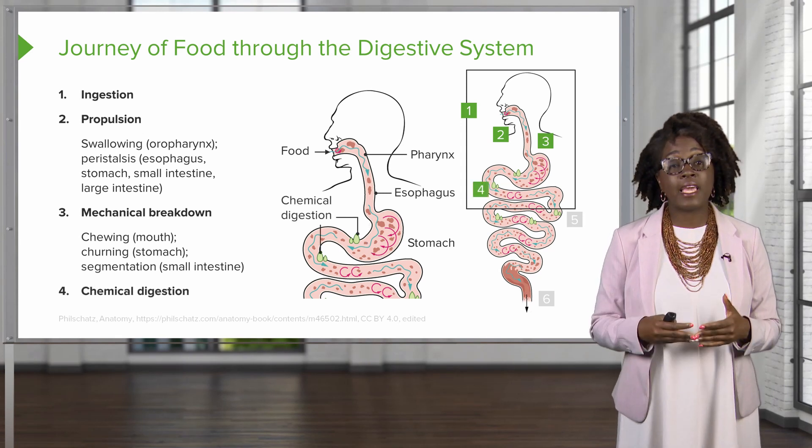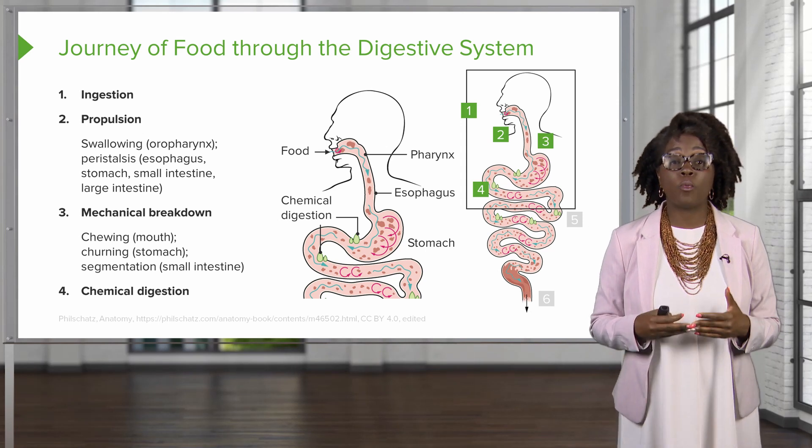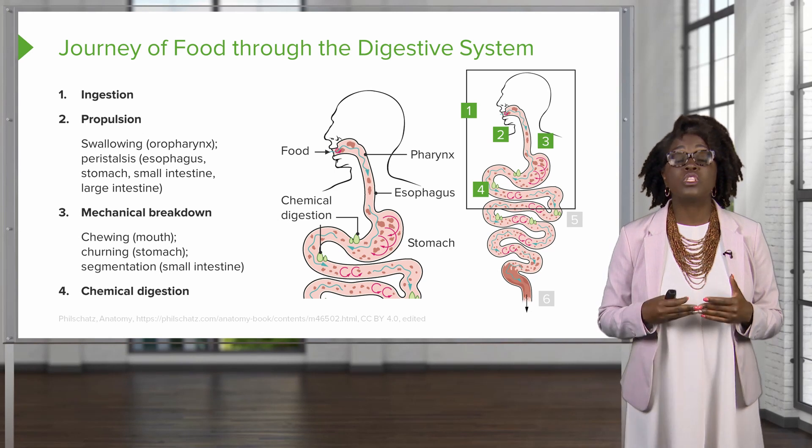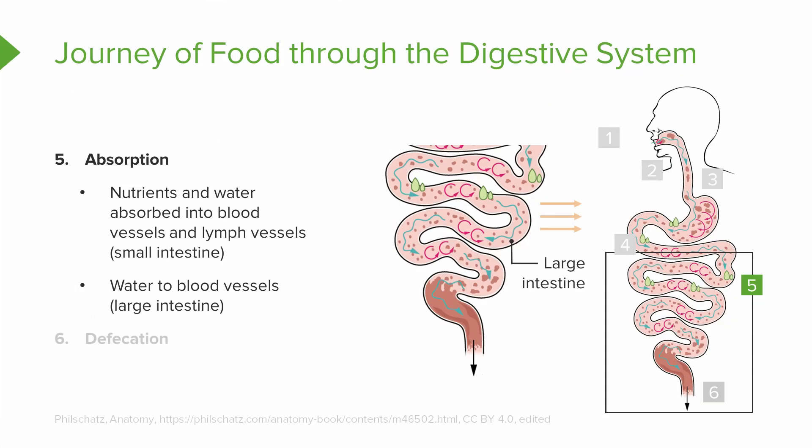Along with mechanical breakdown, we also have a chemical breakdown of our food from the larger biomolecules to the smaller biomolecules. After we break the food down, we have absorption. Absorption is going to take place mostly in our small intestine and our large intestine. In this process, nutrients and water are going to be absorbed into the blood vessels or the lymph vessels. Water is also going to go into the blood vessels, mainly in the large intestine.